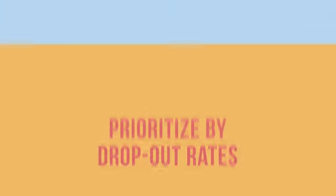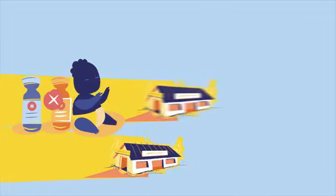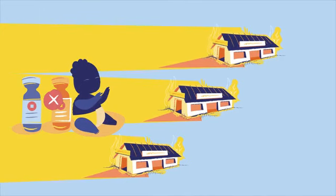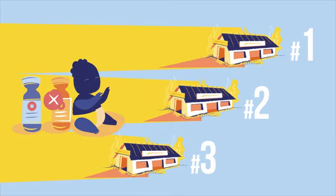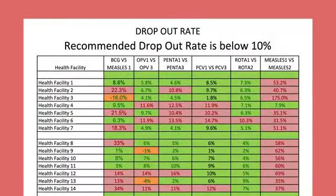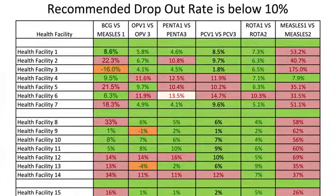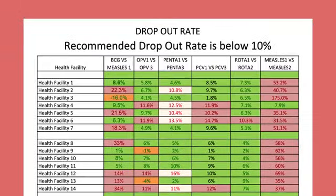If you do not feel confident about your population data, another useful way to prioritize is by dropout rates, or the number of unimmunized due to dropouts, since those numbers may be more reliable. For example, look for areas where the dropout rate between pentavalent 1 and pentavalent 3 is 10% or higher, or the dropout rate between pentavalent 1 and measles is 10% or higher. This is a sign that children may have the initial access to vaccines but then fail to complete the vaccination series for some reason.